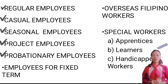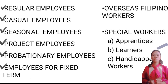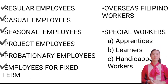The sixth is employees for fixed term. Employees on fixed-term contracts are individuals who are hired for a specific duration or fixed period of time. Unlike regular or permanent employees, their employment is limited to a predetermined period agreed upon by the employer and employee at the time of hiring. Fixed-term contracts are commonly used for temporary projects, seasonal work, maternity leave cover, or to address short-term business needs.